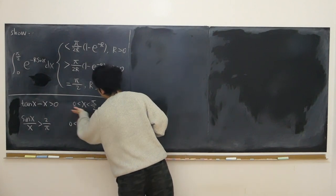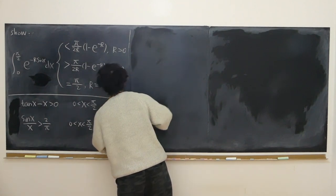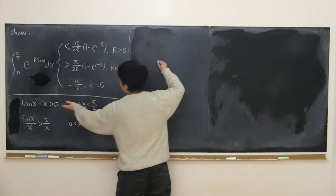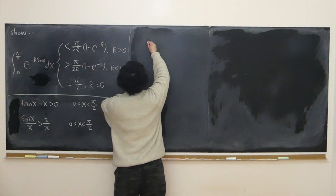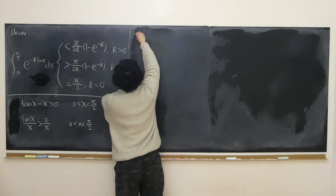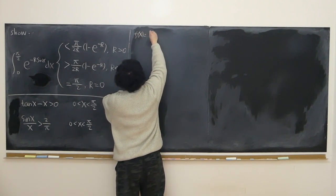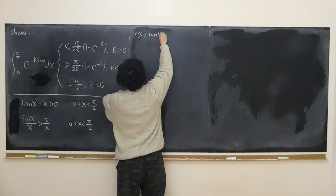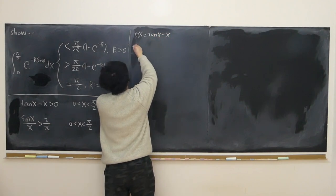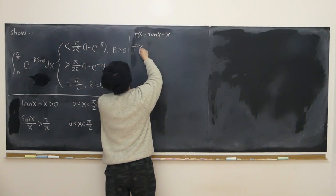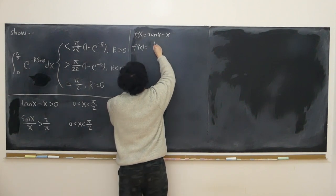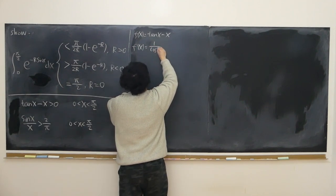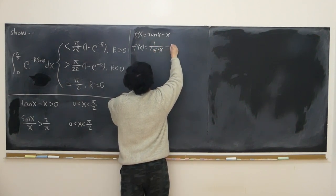For the first lemma, let's look at the left-hand side function denoted as f of x equal to tangent x minus x. What's its derivative? That's 1 over cosine squared x minus 1.